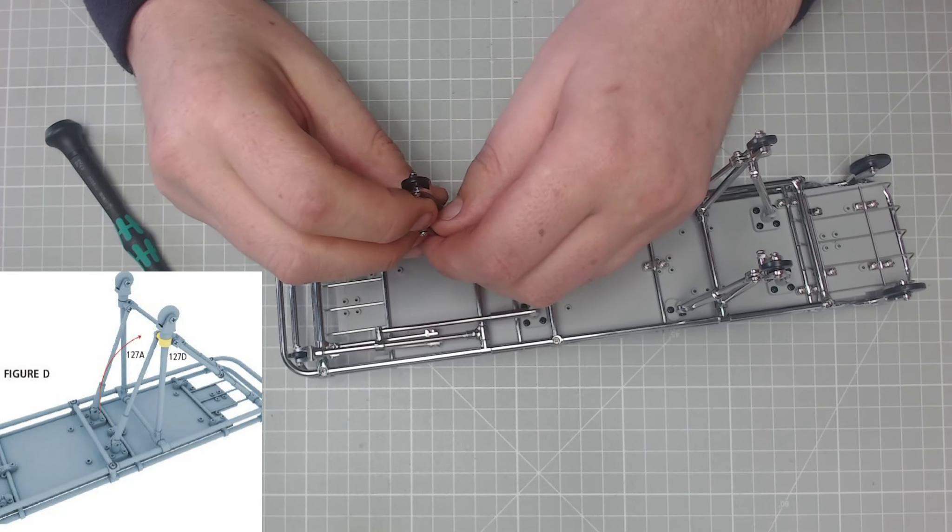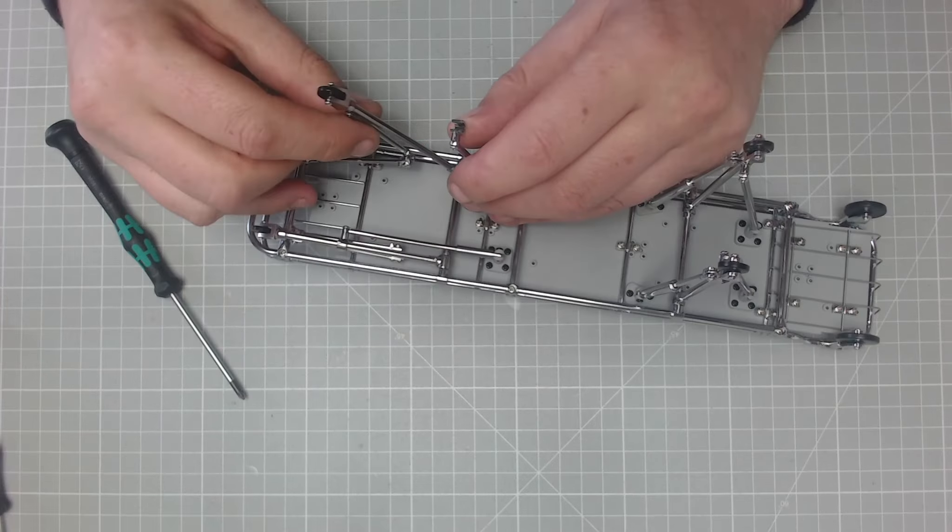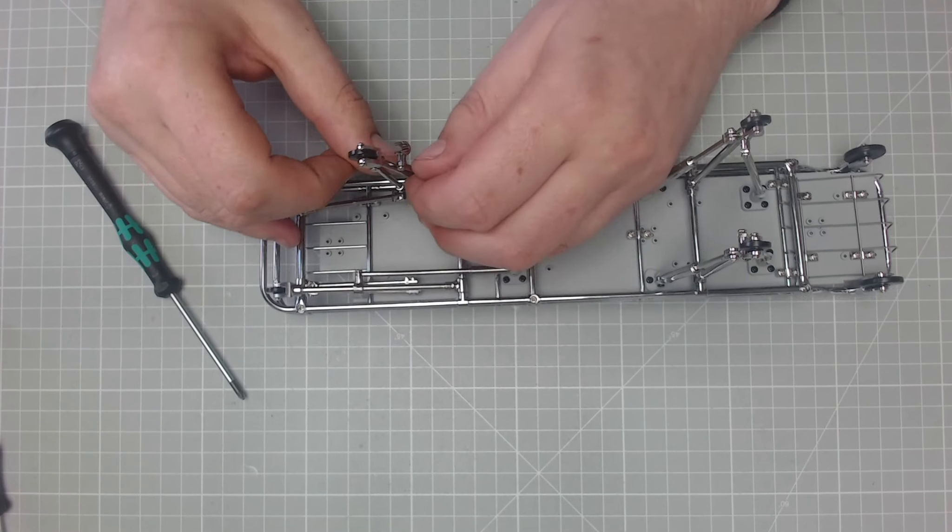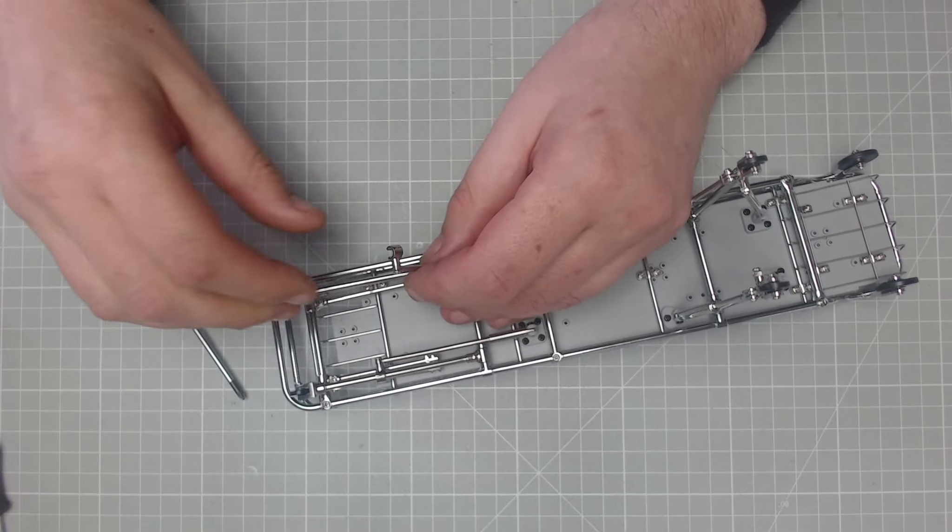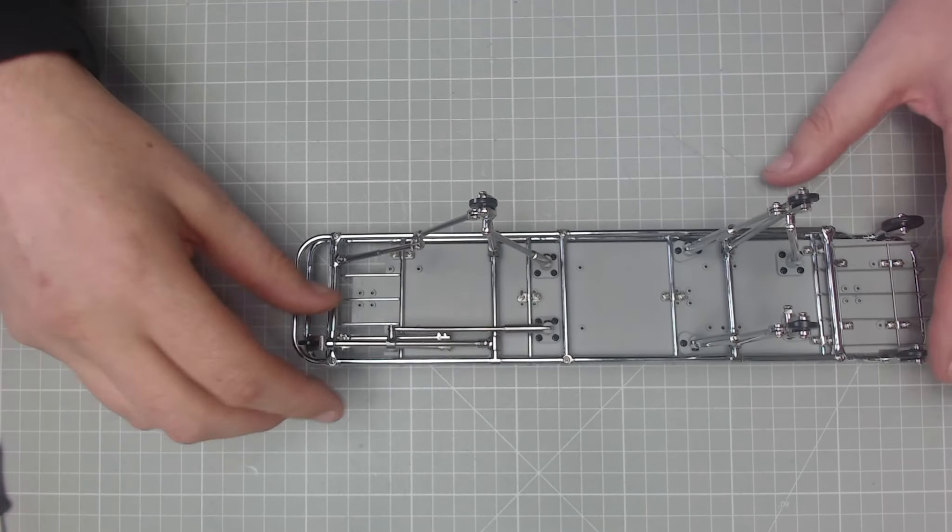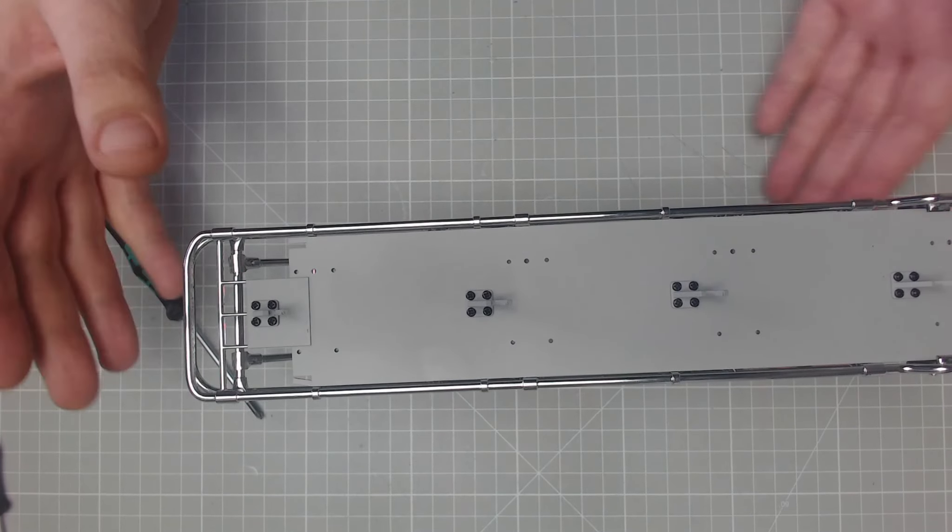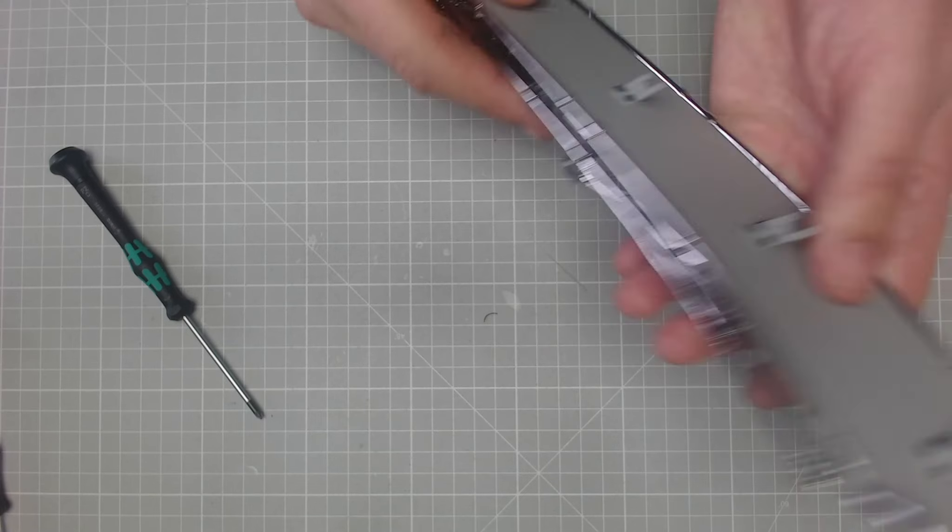Okay, and then the next last thing we need to do is we need to connect this onto the outer bar, just like that. And then we now have all four wheels all done. Thank goodness.